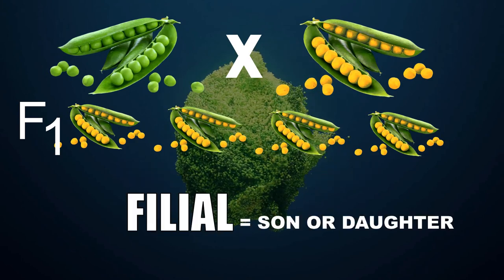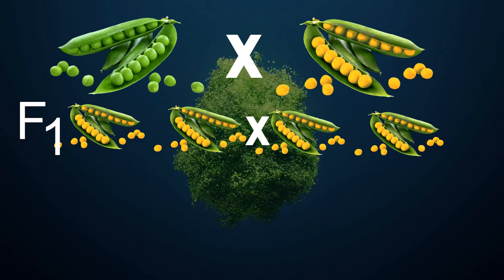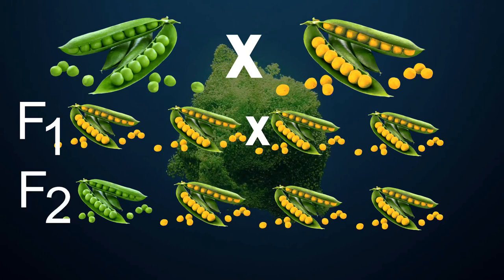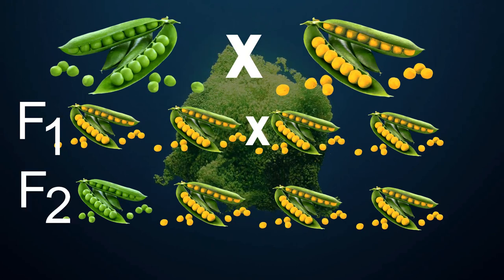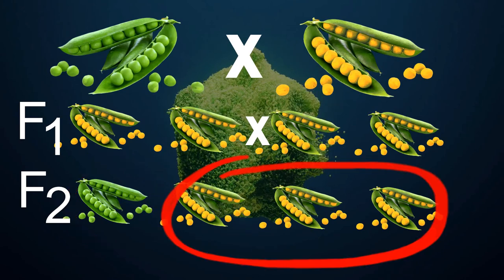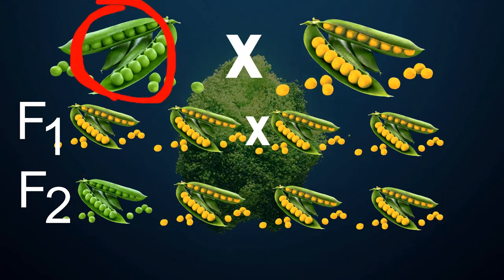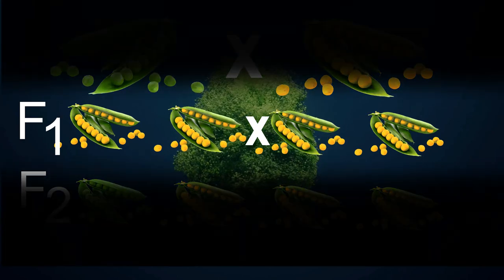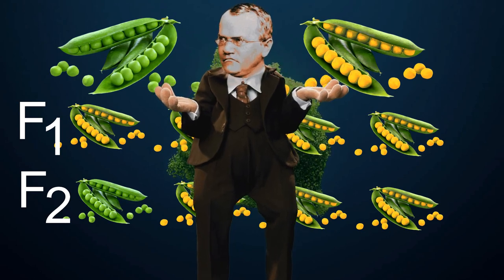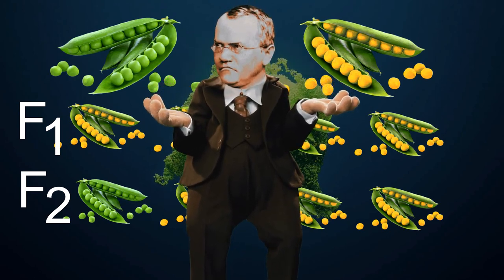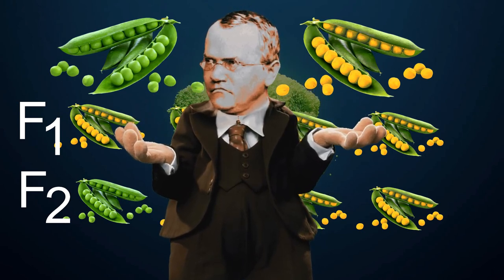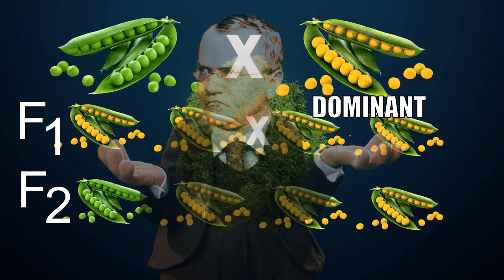Filial means son or daughter. So Mendel bred these F1s with each other — and yes, it's inbreeding. And these offsprings will be the second filial generation. Mendel noticed that there were 25% green peas and 75% yellow peas in this F2 generation. The green peas disappeared in the F1 but reappeared in the F2 generation. So Mendel decided that there were factors that could be either recessive or dominant. In this breeding, he learned that yellow is dominant and green is recessive.